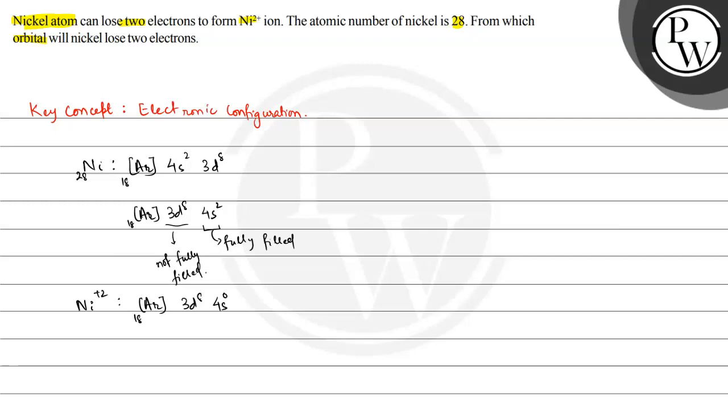So here the s orbital's two electrons are released, and this is because 4s is the outermost subshell.